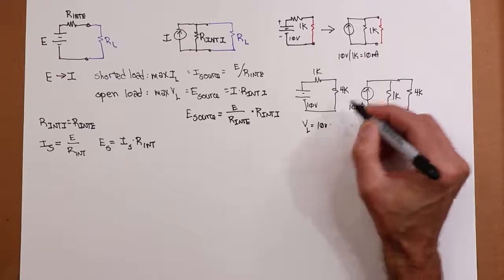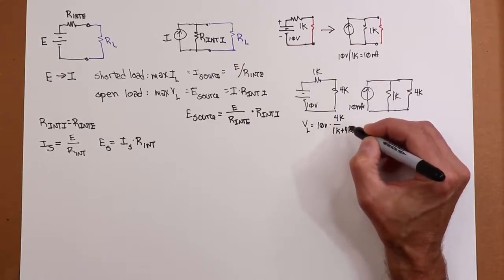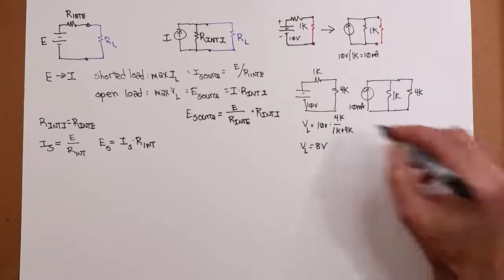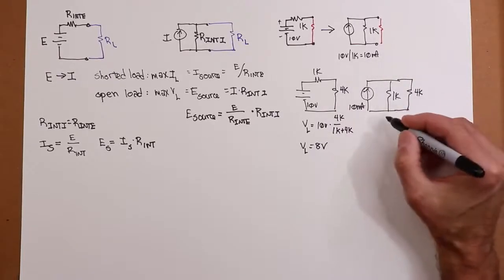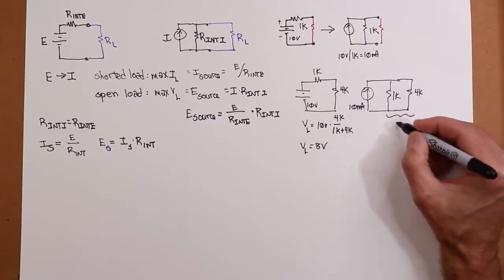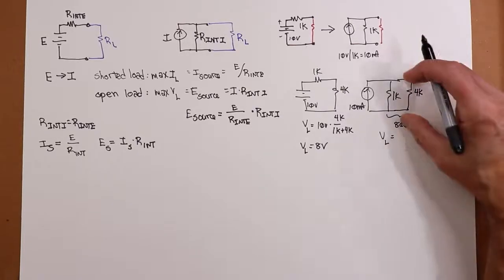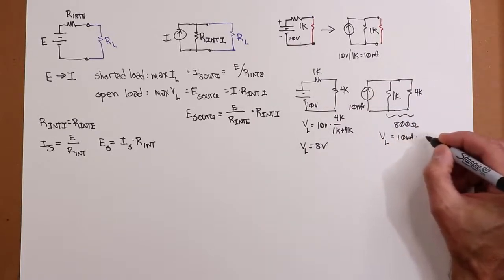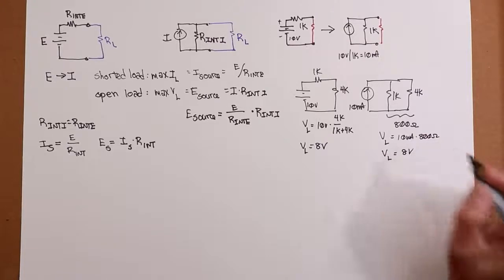What do I have over here? I've got a voltage divider. So my load voltage over here is going to be 10 volts times 4K over the total, 5K. So that's 4 fifths, 80%. VL is 8 volts. What do I have over here? Again, if I just want to find the voltage, easy thing to do would be to put these two in parallel, 1K in parallel 4K. That's 4 fifths of the 1K. That's 800 ohms. So VL, parallel circuit, all voltage is the same, is simply 10 milliamps times the 800 ohms. Bingo. 8 volts.